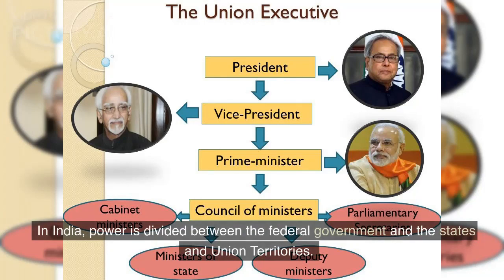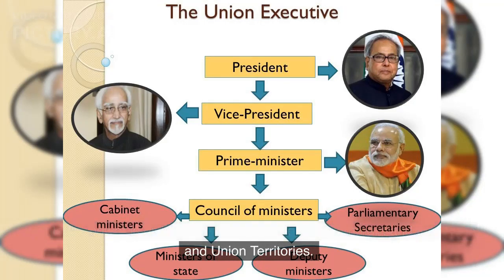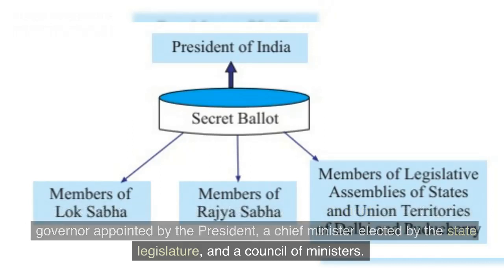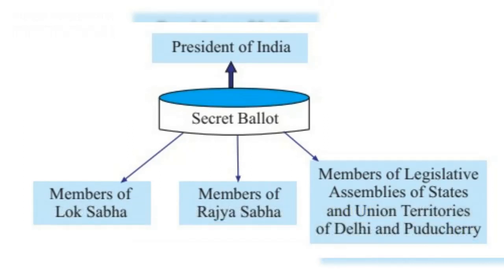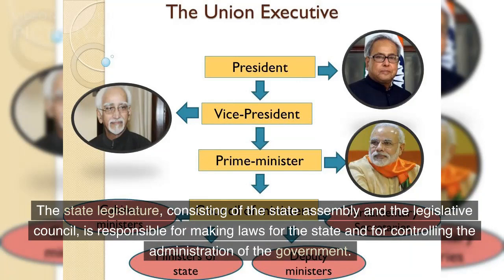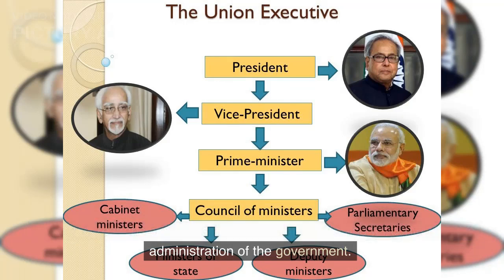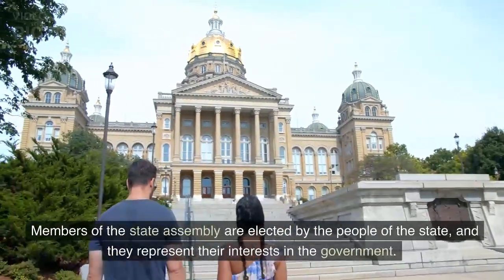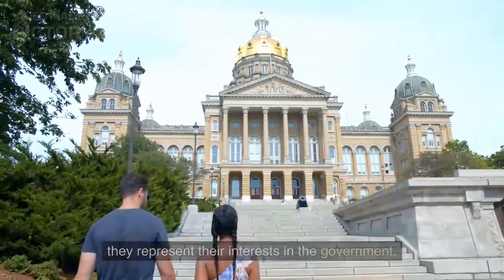In India, power is divided between the federal government and the states and union territories. Each state and union territory has its own government, consisting of a governor appointed by the president, a chief minister elected by the state legislature, and a council of ministers. The state legislature, consisting of the state assembly and the legislative council, is responsible for making laws for the state and for controlling the administration of the government. Members of the state assembly are elected by the people of the state and represent their interests in the government.